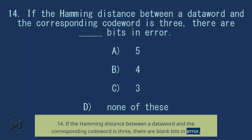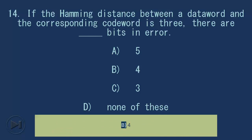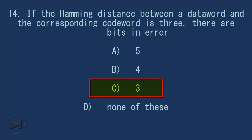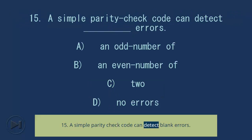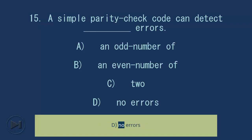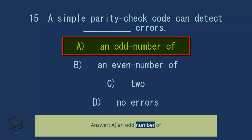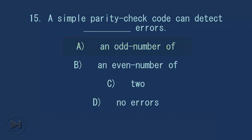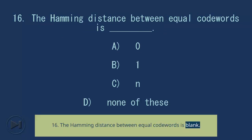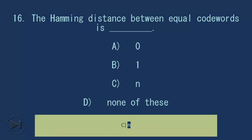Question 14: If the Hamming distance between a data word and the corresponding code word is three, there are blank bits in error. A) 5, B) 4, C) 3, D) none of these. Answer: C, 3. Question 15: A simple parity check code can detect blank errors. A) an odd number of, B) an even number of, C) 2, D) no errors. Answer: A, an odd number of. Question 16: The Hamming distance between equal code words is blank. A) 0, B) 1, C) n, D) none of these. Answer: A, 0.